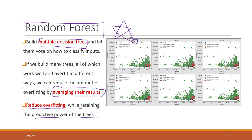For example, here we build five decision tree models, and we can see each tree model generates slightly different results. In the final output of the random forest, we choose the average result of all five tree models, so the final output will be less overfit to the training data. However, it also has decent accuracy in terms of predictive power. That is the basic idea of random forest.